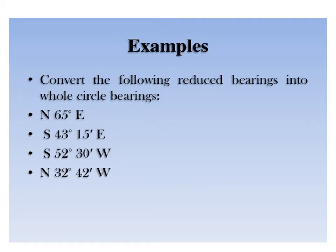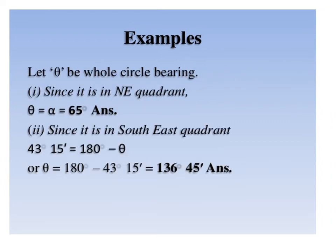This slide refers to conversion of reduced bearing to WCB for lines lying in the first, second, third, and fourth quadrants. For WCB of 335 degrees, the line lies in the fourth quadrant, nearer to north towards west. Reduced bearing equals 360 minus WCB: 360 minus 335 equals 25 degrees. The line is in the north-west quadrant, so the reduced bearing is N 25 degrees west.